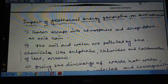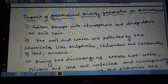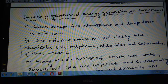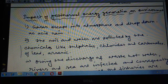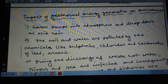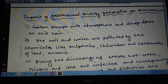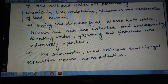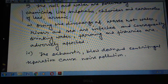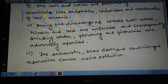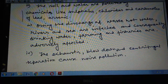The impact of geothermal energy on environment. Gases escape into atmosphere and cause acid rains. The soil and water are polluted by chemicals like sulphate. When the discharge of waste hot water occurs, rivers and seas are infected and pollution occurs in seas and other areas. Another problem is blowdown and centrifugal separation causing noise pollution in this type of systems.